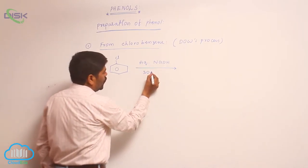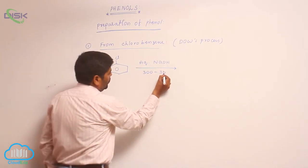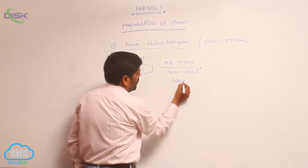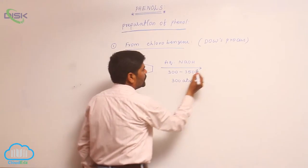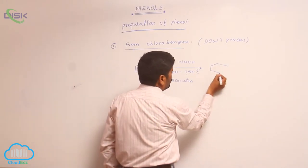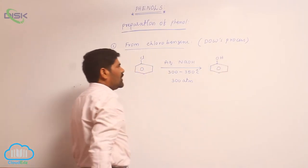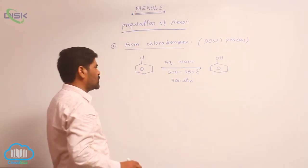At 300 to 350 degree centigrade and 300 atmosphere pressure to form phenol. This particular process is known as Dow's process.